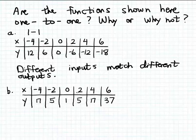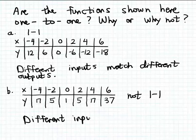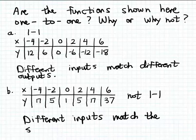That's also the case for -2 and 2. They also match the same output value, namely 5. So in this case, we do have different inputs, different x values, that match the same output value. So this function in part b is not an example of a one-to-one function. It is a function, but it's not a one-to-one function, because different inputs match the same output, and that does not happen in a one-to-one function.